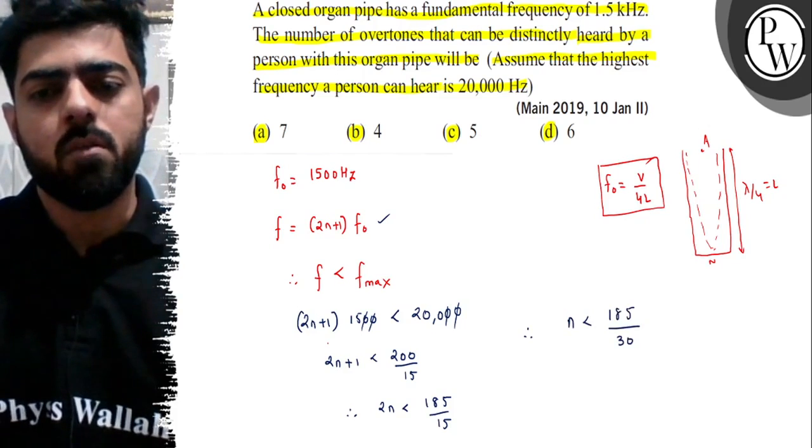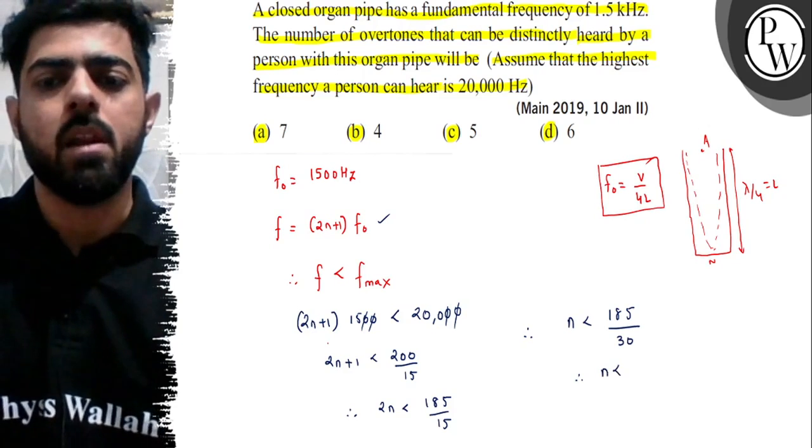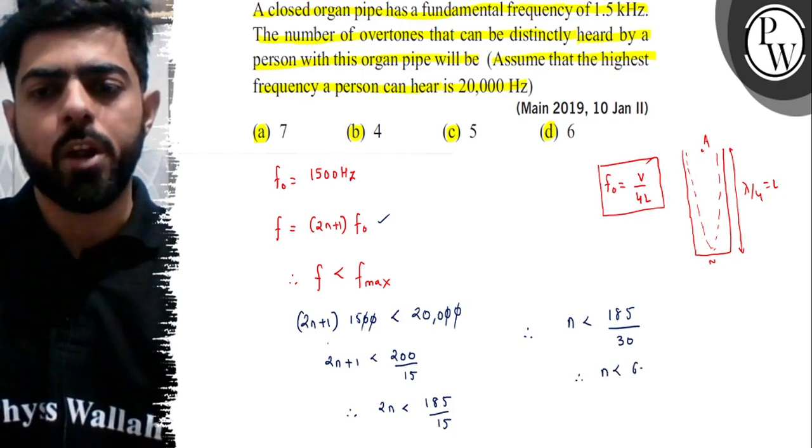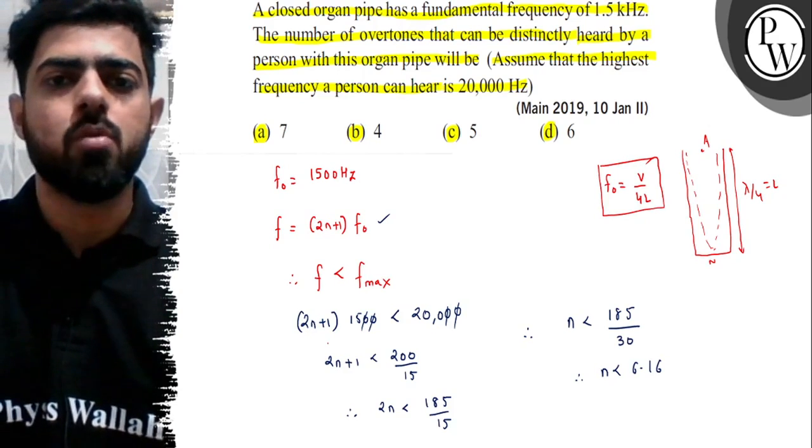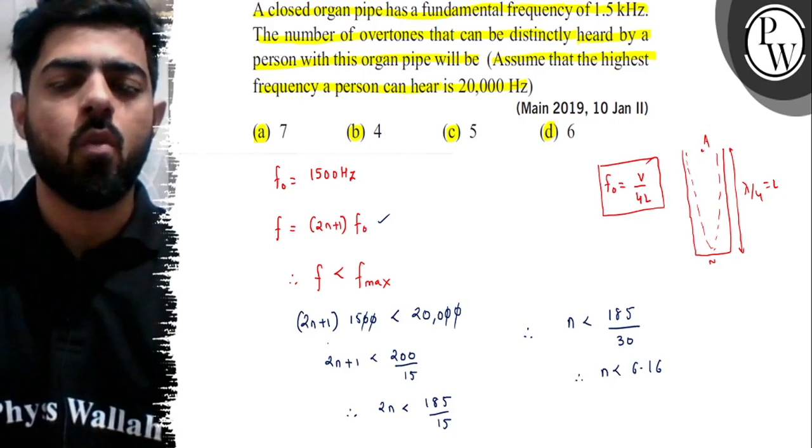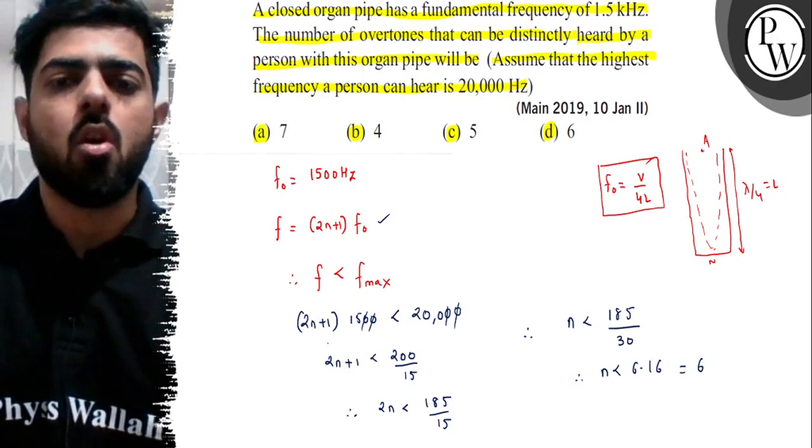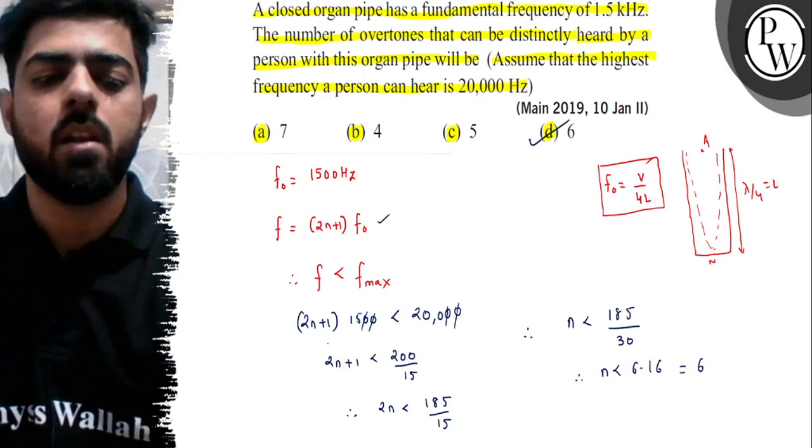If we carefully analyze, the number of overtones will be in integer terms, so it will be 6. Therefore, option D is the correct answer to this question. I hope you understood it well, all the best.